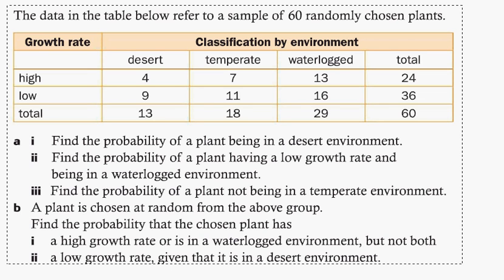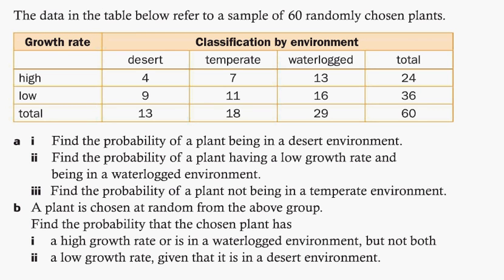Okay, in this problem, I'm going to do a quick probability problem from a table. I'm going to do a couple of these, one from a tree diagram, one from a table, just to kind of give a little review for my students here. The data in the table below refer to a sample of 60 randomly selected students. That's important, so let's look at 60 right there. You have your totals here, you have classified by environment, growth rate, let's just dig right into this.